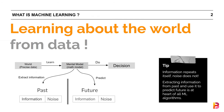Learning about the world from data — this is the heart and essence of machine learning. In machine learning, we observe the world using precise data and learn from it by creating mathematical models. Learning means extracting and isolating information from noise, distilling it away, and putting it into a meaningful model — a model which can then be used to predict the future and aid decision making. This is the essence of all machine learning.